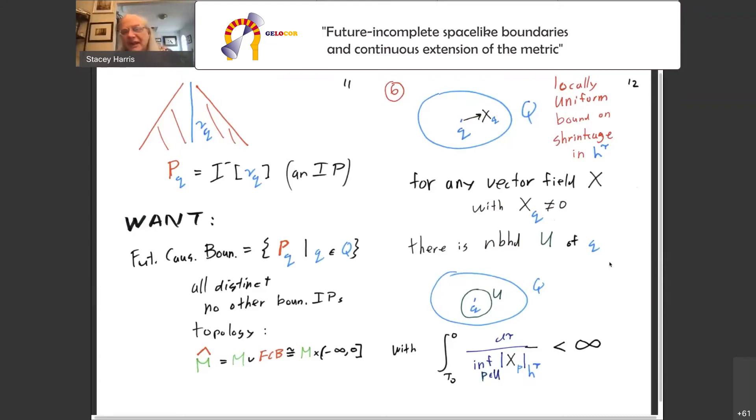Next assumption is a locally uniform bound on how that metric h can shrink in time. Essentially, it's an integrability condition on one over the length of a vector. For a vector field X non-vanishing at some particular point q, I have to have a neighborhood u of q, so that when I take the infimum of the size of X in h tau, infimum over the points p in u, reciprocal of that should be integrable. So this is saying that the size of a vector doesn't go to zero too fast. And furthermore, that not going to zero too fast is sort of locally uniform by this infimum over some neighborhood.